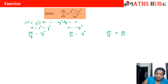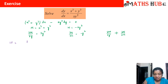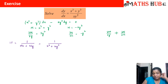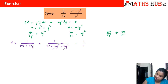We need to find an integrating factor. Checking homogeneity: all terms of M are of degree 3, and all terms of N are of degree 3, so it is homogeneous. The integrating factor is 1/(Mx + Ny). Multiplying M by x gives x⁴ + xy³, and multiplying N by y gives -xy³. These terms cancel, giving the integrating factor 1/x⁴.